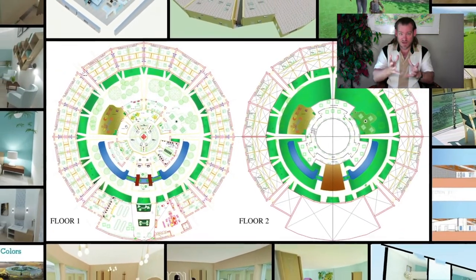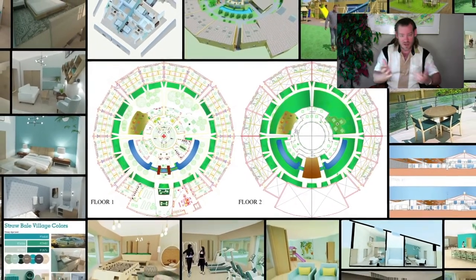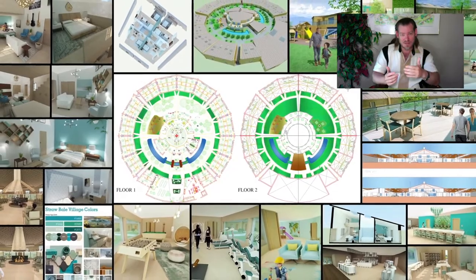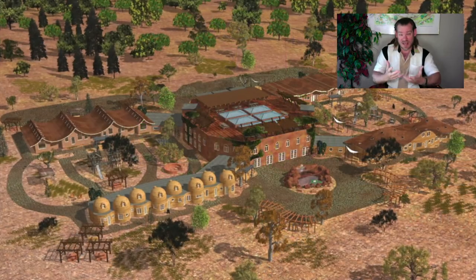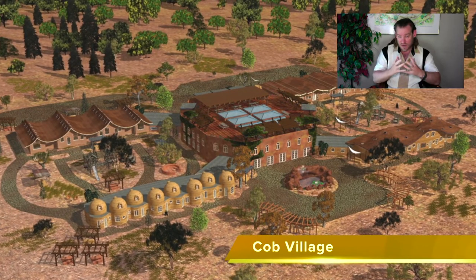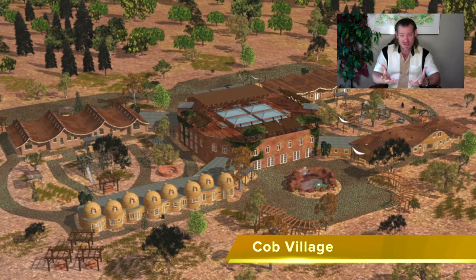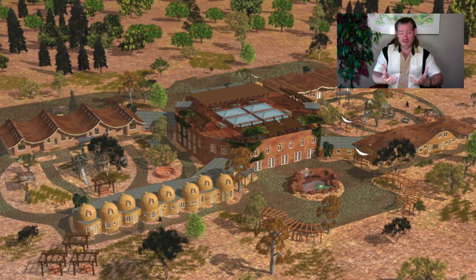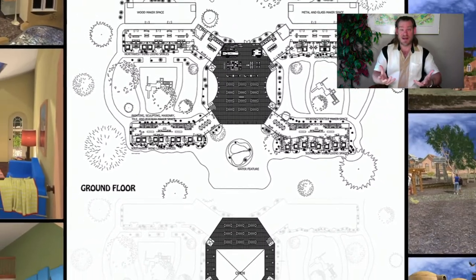One Community is the physical manifestation where we build it out, test all the free shared plans and everything we've been developing for the last decade, and add step-by-step tutorial videos and PDF downloads. We will simultaneously share One Community as a place where 30 percent of what we're creating is built so that visitors can come and experience, see, and participate in what we're doing so that they can become inspired by it.